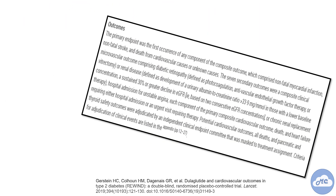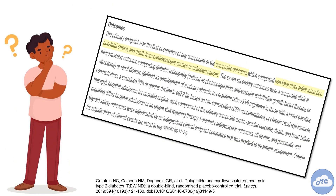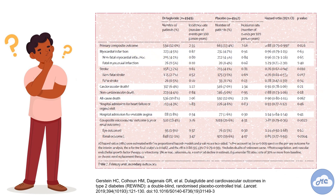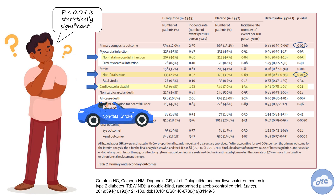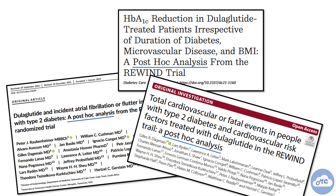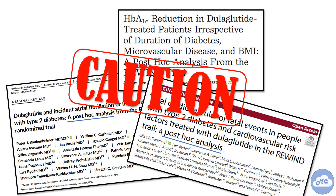Results from trials that use composite endpoints can be complicated to interpret. Oftentimes, the effect is smallest for the most important component and largest for the less important components. When reading such trials, it is important to evaluate the individual components to see what is driving statistical significance. Authors tend to perform post-hoc analyses on composite endpoints, and these should be interpreted with caution and considered hypothesis-generating.